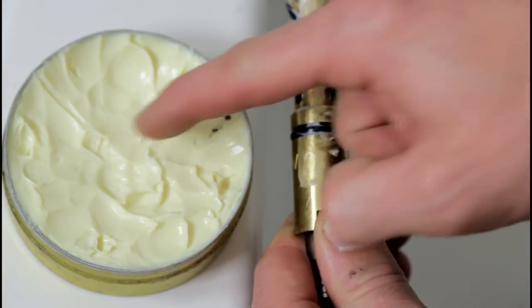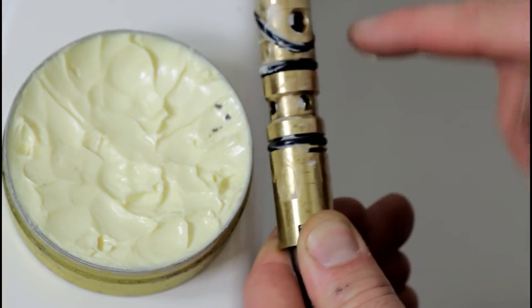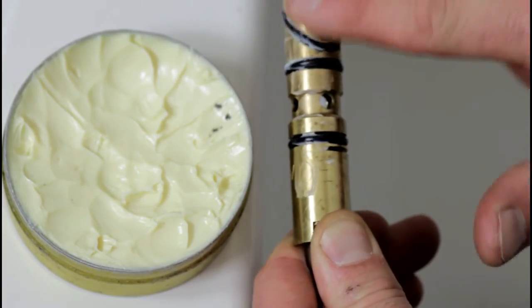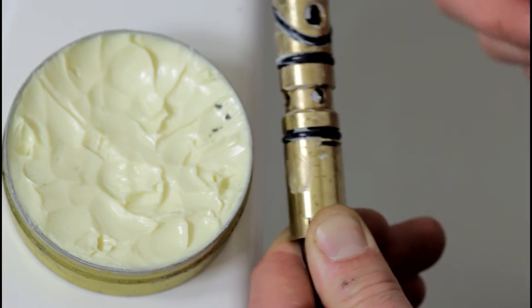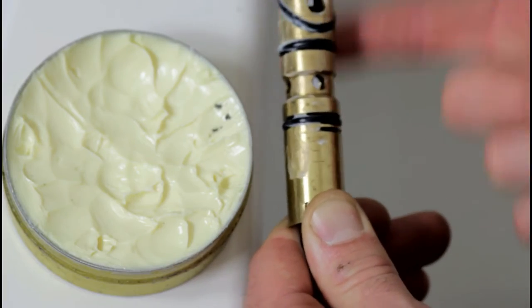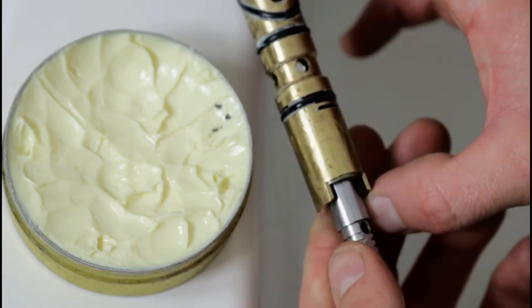I'm not going to be shy when applying faucet lube. I want to make sure I get enough on there, especially on every single o-ring. I really want to coat them well to prevent any sticking that might occur over time. I even want to get some faucet lube down in the inner workings of the cartridge itself.